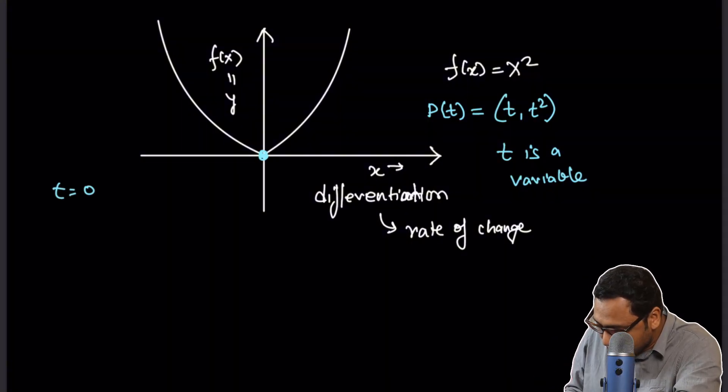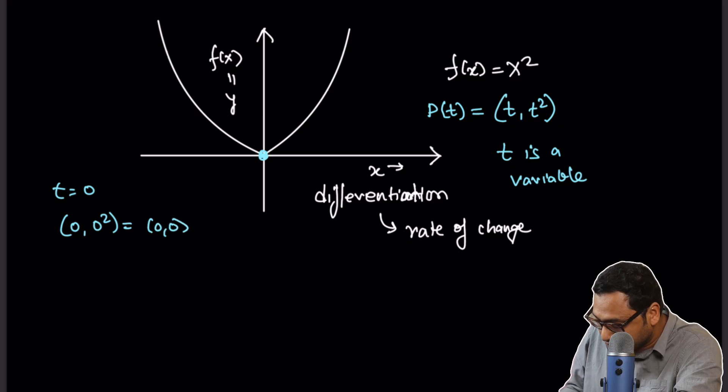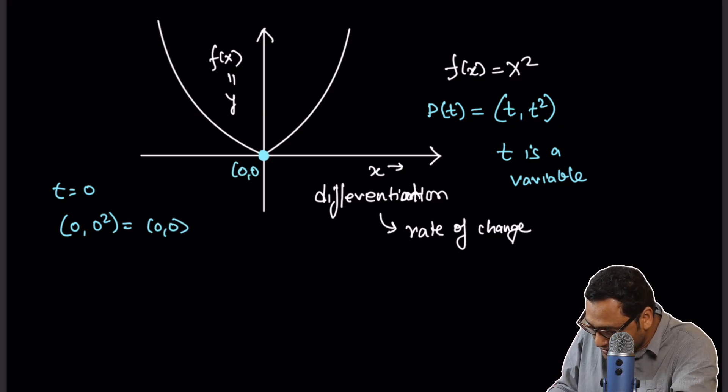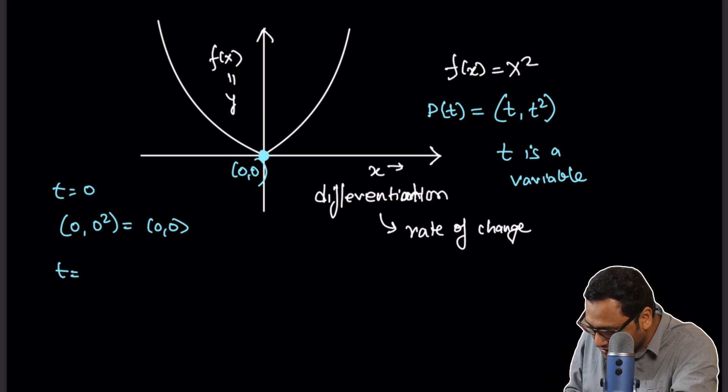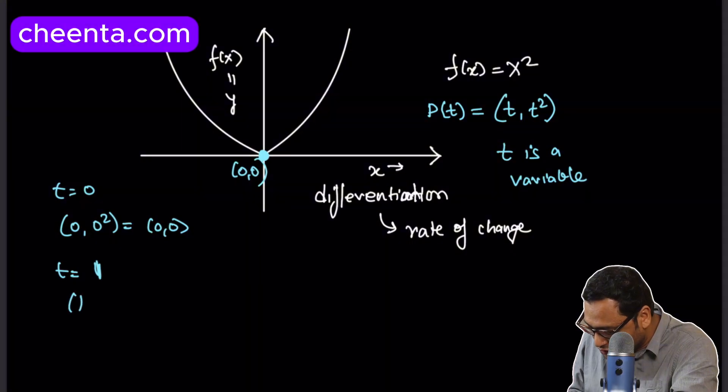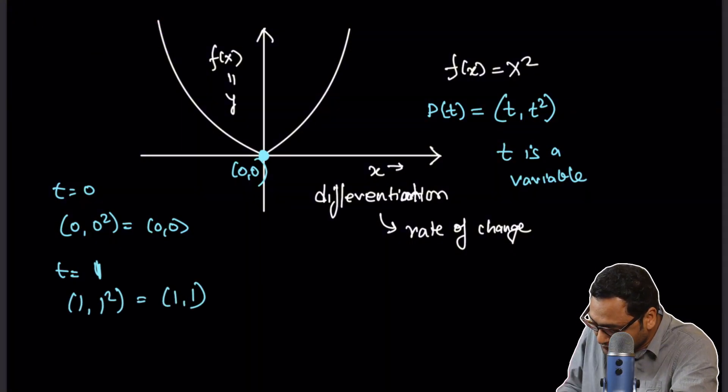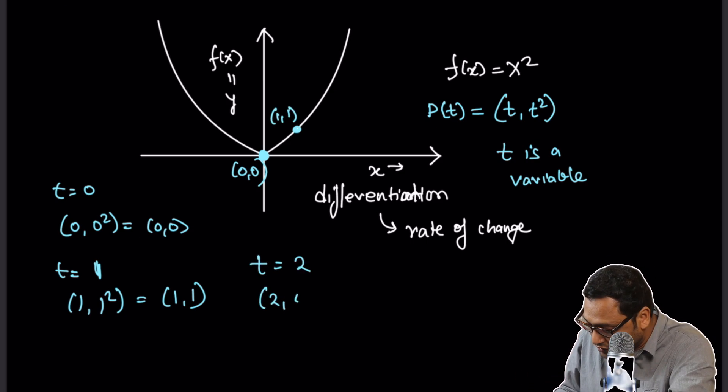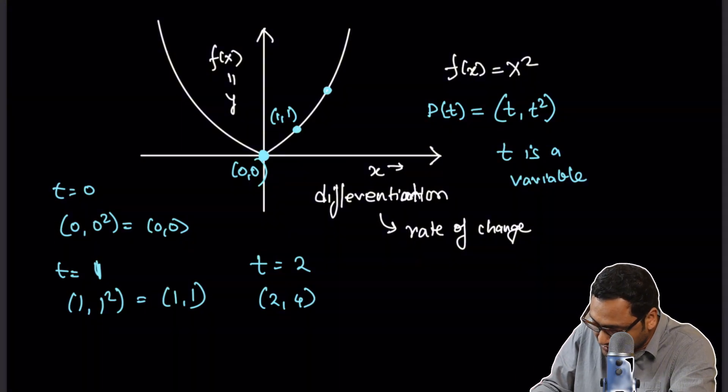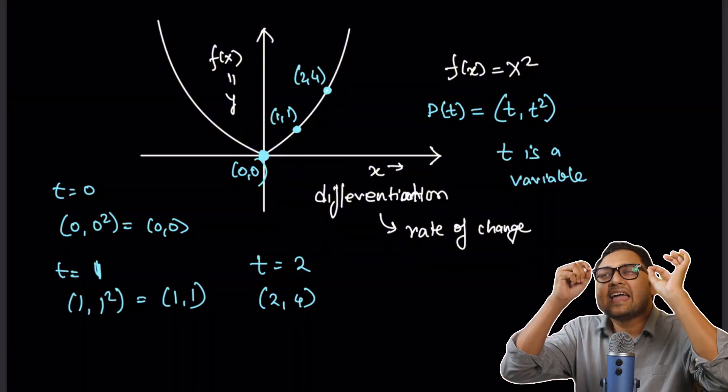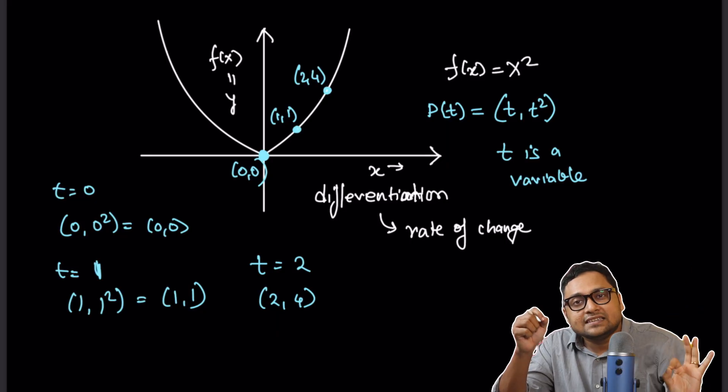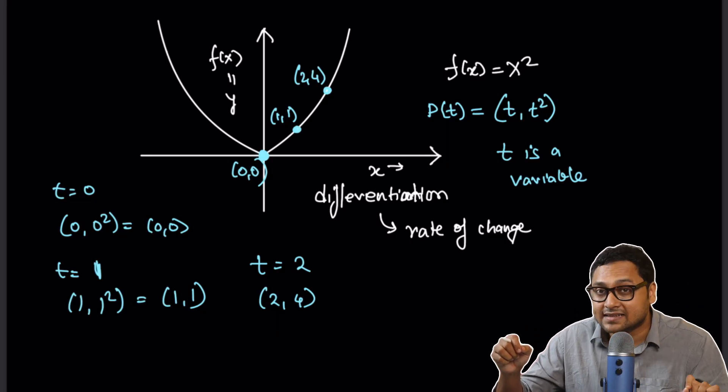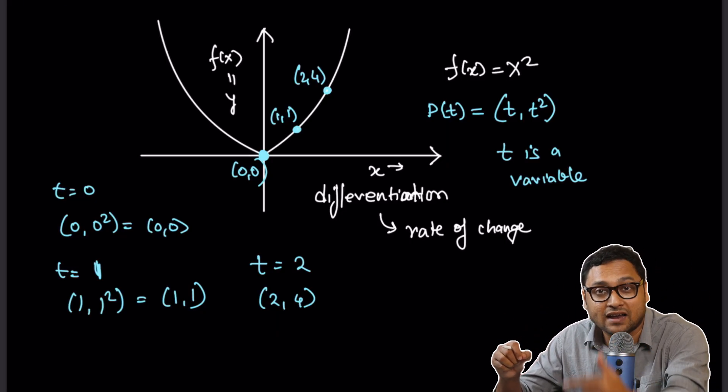So if t is equal to 0, I will be plotting (0, 0 squared), which is (0, 0), this point. If t is equal to 1, I will plot (1, 1 squared), which is (1, 1), which is this point, 1, 1. If t is equal to 2, I will plot (2, 4), which is here, 2, 4.